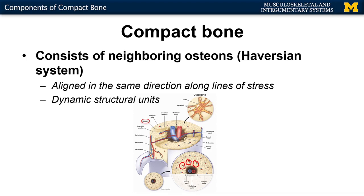These osteons, or these structural units, are very well organized. They're going to be organized along lines of stress. So if a certain type of stress is always occurring on a bone, these osteons are going to form in such a way in order to protect or to keep the bone structurally sound.